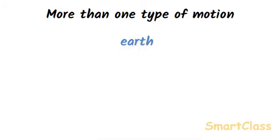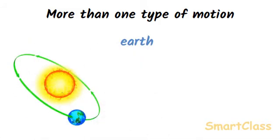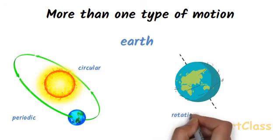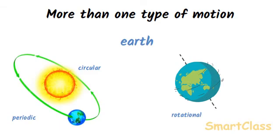Earth. Earth moves around the sun so it has a circular motion. And earth repeats its motion around the sun after a regular interval of time i.e. one year. So, it has a periodic motion too. Also, earth rotates on its axis. So, it has a rotation motion. In this way, earth has three types of motions at the same time.